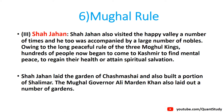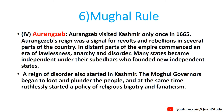After Shah Jahan, when Aurangzeb came, the condition of Kashmir started to deteriorate gradually. During Aurangzeb's reign, there was no law and order in Kashmir. The local governors became independent heads. Aurangzeb visited Kashmir only once, in 1665.